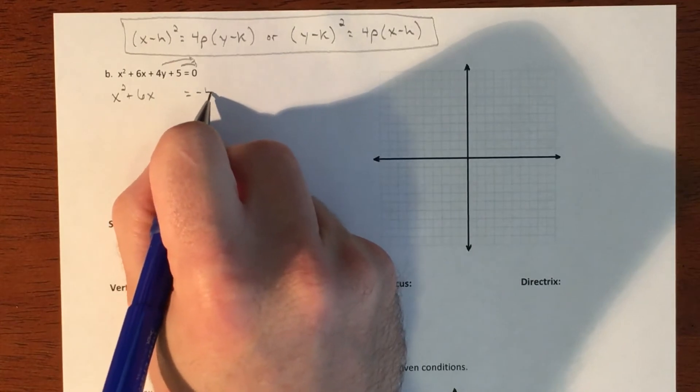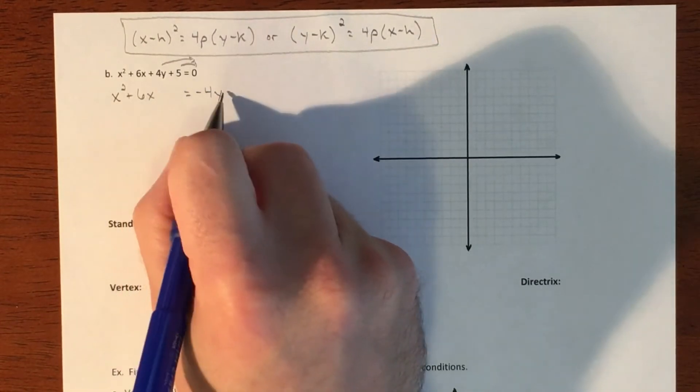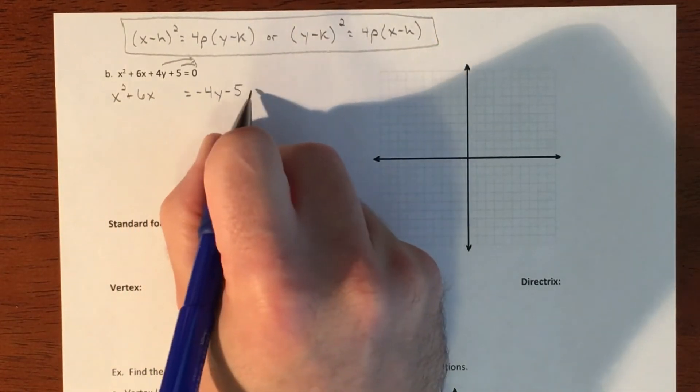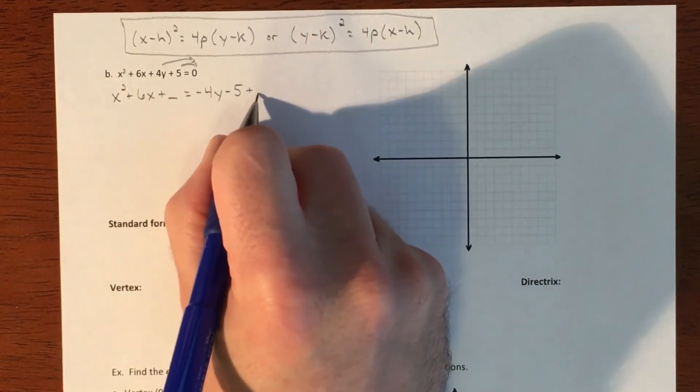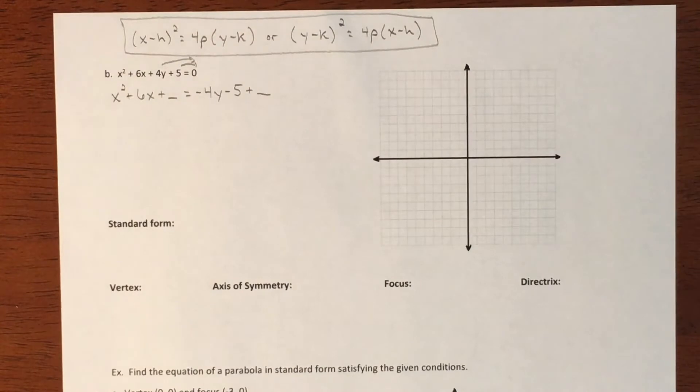And then when we bump the 4y over, it becomes a negative 4y. We bump the 5 over, it becomes a negative 5. And we are going to add something to both sides when we complete the square here.